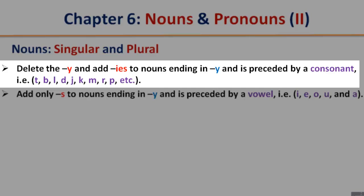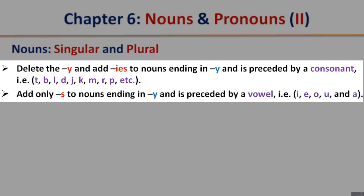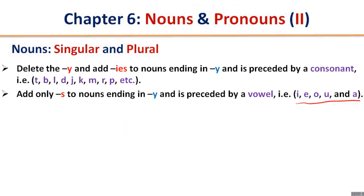For example, consonants include T, B, L, D, J, K, M, R, P — basically anything that is not a vowel. Add only S to nouns ending in Y that is preceded by a vowel: I, E, O, U, A.